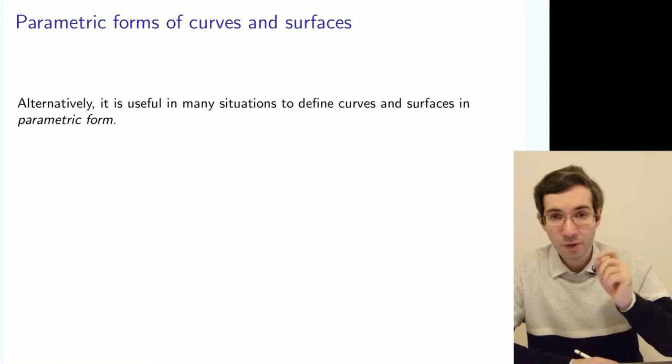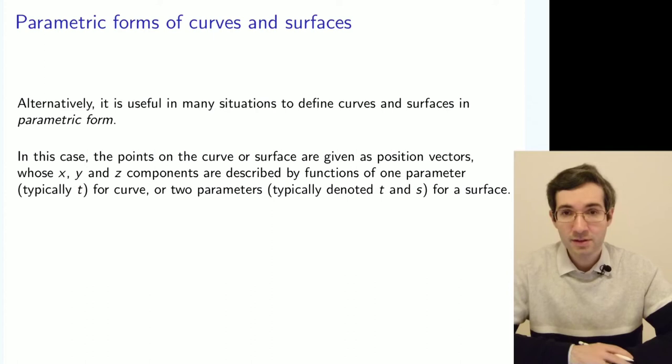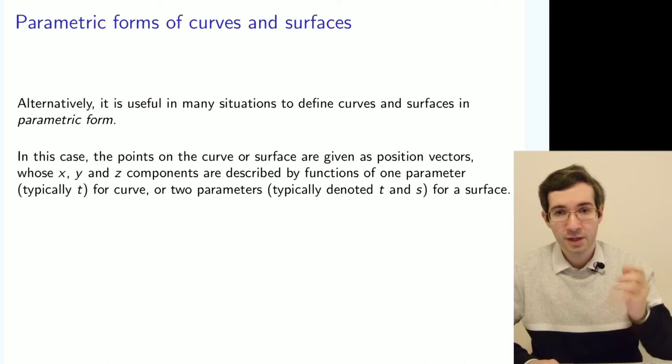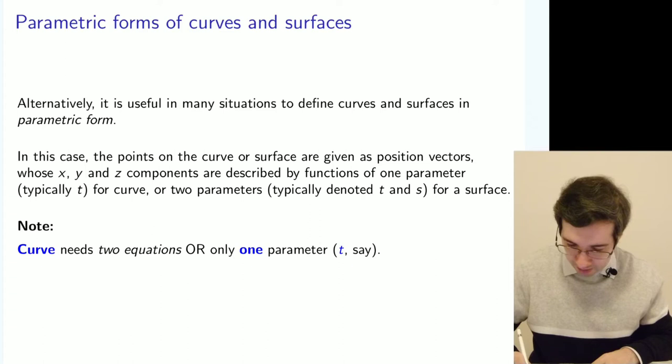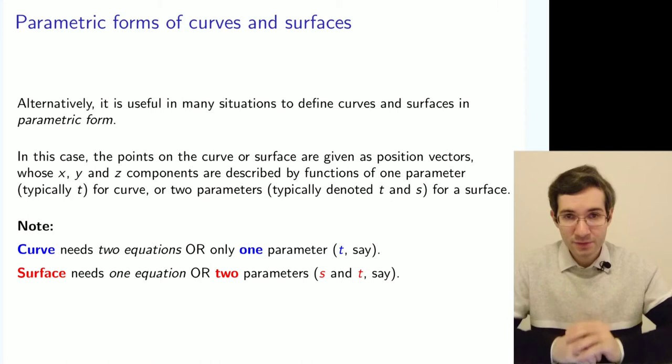There you use a parameter to tell you where you are on the surface or on the curve, along the curve. What you have is you have a position vector which traces your location on the surface so that it can describe your location. A good example on the surface will be a latitude and longitude as the two parameters. What's important to know is that we need one parameter for the curve or two equations to get the intersection. But we need two parameters for the sphere or for general surface.